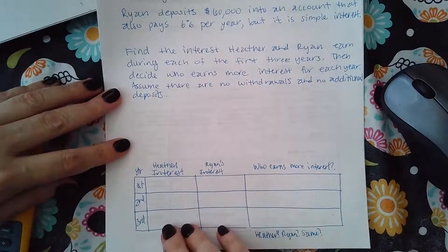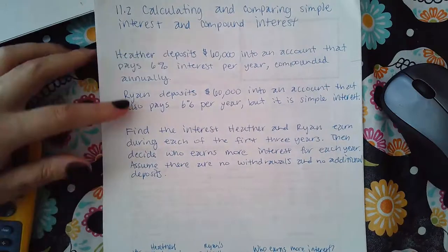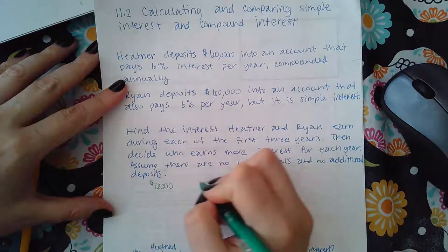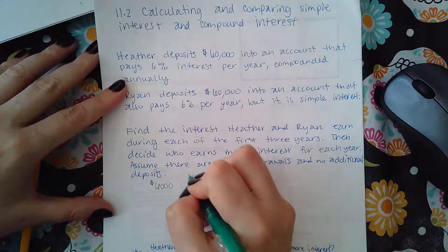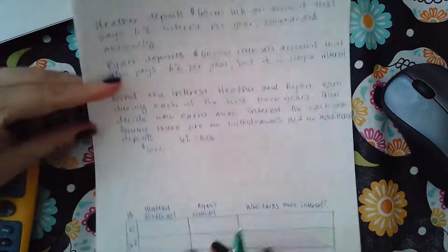So they want you to do for the first, second, and third year. Now for both cases it's the same for the first year. So they are both depositing $6,000 and the rate is going to be 6% or 0.06.